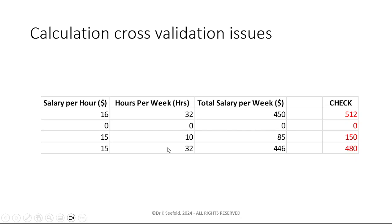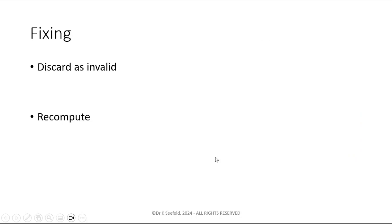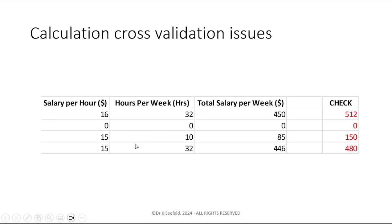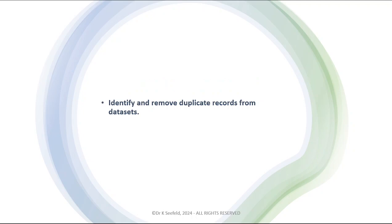What to do with cross-validation issues: if you have these values and trust them, you can just recompute the total salary — there's just something wrong with how it was calculated. You could discard it as invalid, but if you trust the hourly wage and hours worked per week, there'd be no reason to throw that part away. Just recompute it.